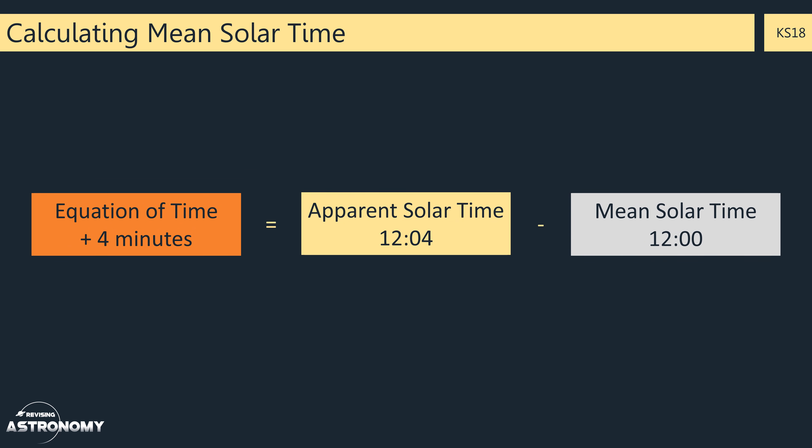If we take these values and look at them together, you can see that it's easy to create an equation to work out the equation of time. It's the apparent solar time minus the mean solar time.